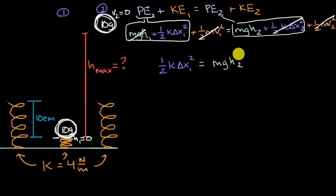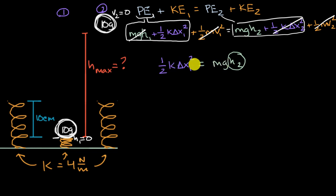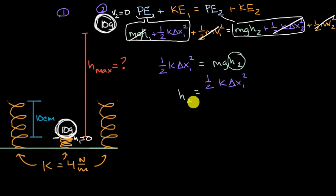We just need to solve for the maximum height h two. Dividing both sides by mg gives us: H two equals one half times K times delta X one squared, all over mg.